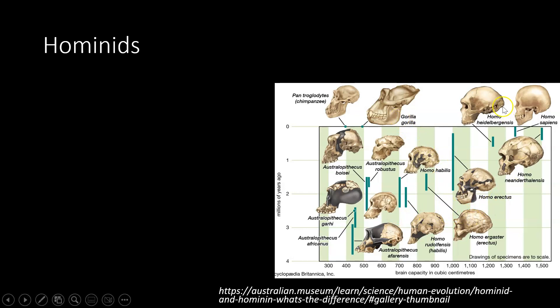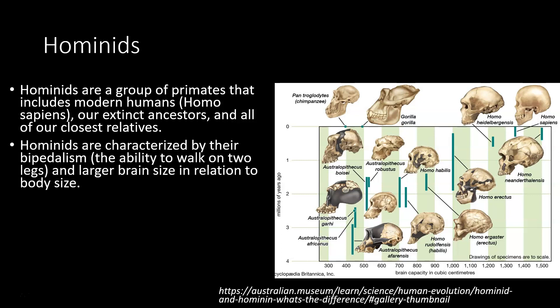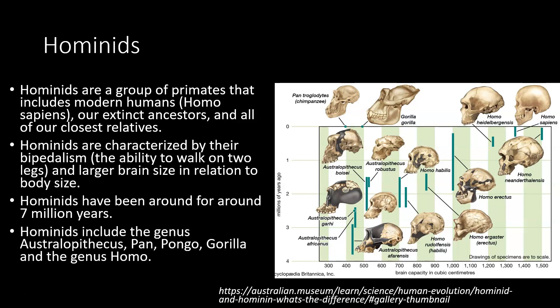Hominids: here we have the gorilla skull — one of my favorites. Pantroglodytes is the chimpanzee. And here are all our human friends: Homo sapiens, Homo neanderthalensis, Homo erectus, Homo ergaster, and so on. So hominids with a D are a group of primates that includes modern humans — that's Homo sapiens — all of our extinct ancestors, and all of our closest current relatives. The word for the opposite of extinct, still alive, is extant. Hominids are characterized by bipedalism — the ability to walk on two legs — larger brain size in relation to their body, and they've been around for about seven million years. Hominids include Australopithecus, Pan, Pongo, Gorilla, and the genus Homo — that's all what we would call modern humans.